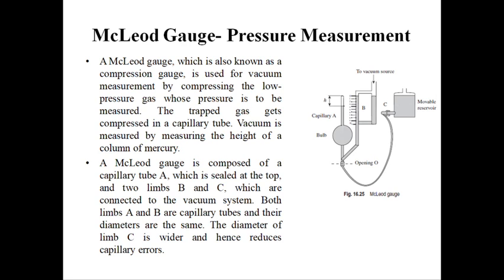McLeod gauges are generally employed to calibrate other high vacuum measuring devices. The presence of condensable vapours in the gas whose pressure is to be measured poses a serious limitation for this pressure measuring device.